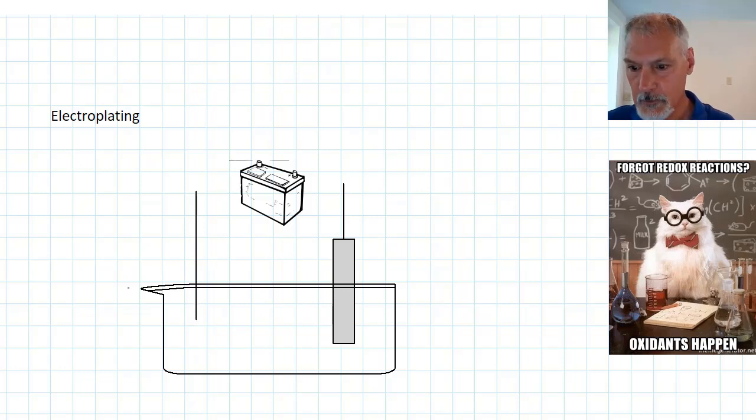Let's say I have some object like a metal key and I want to plate that with silver. So I'm going to place here a silver rod. My solution down here will contain silver ions in it.